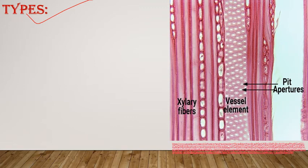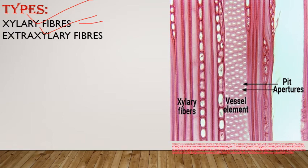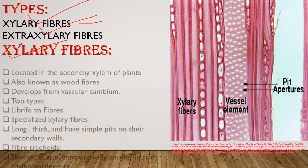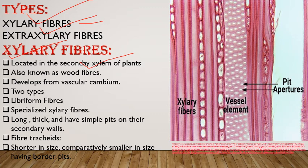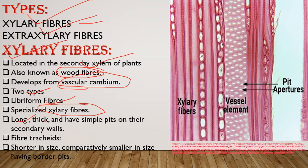Xylary fibers are located in secondary xylem and are also called wood fibers. They develop from vascular cambium during secondary growth. Two types: libriform fibers — specialized xylary fibers that are long, thick, with simple pits in the secondary wall; and fiber tracheids — slightly shorter than libriform fibers with bordered pits guarded by some chemical substance.